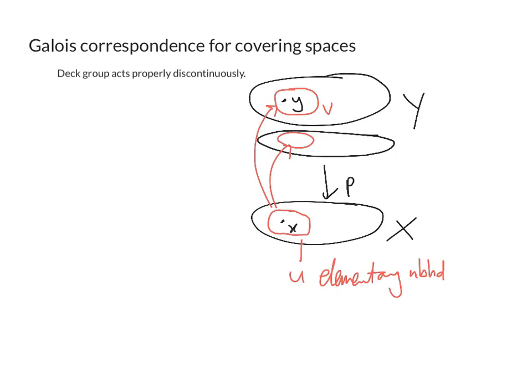So how do we do that? Let's take a deck transformation G and see how it acts. Well suppose G is not the identity. I want to show that G acting on V and remember I write my actions on the right-hand side, so if I do VG that is G acting on V I want to show that its intersection with V is the empty set.